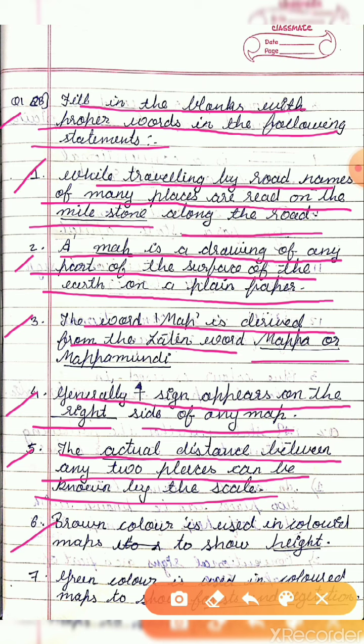Statement 6: Brown color is used in a colored map to show blank. The answer is height.